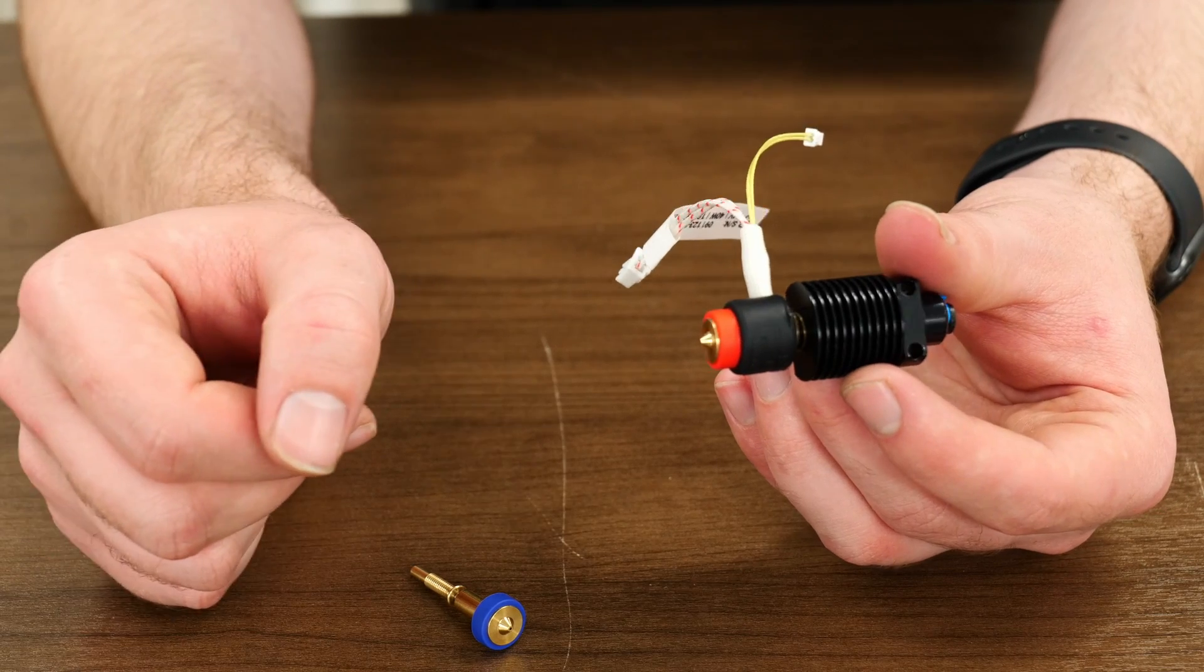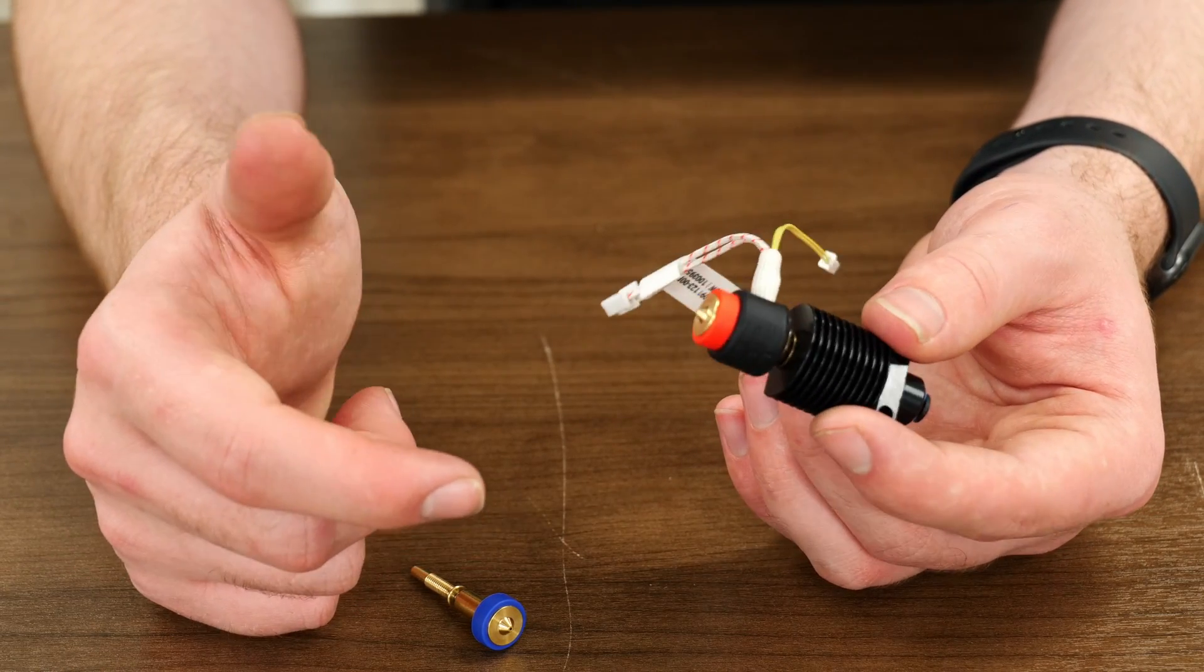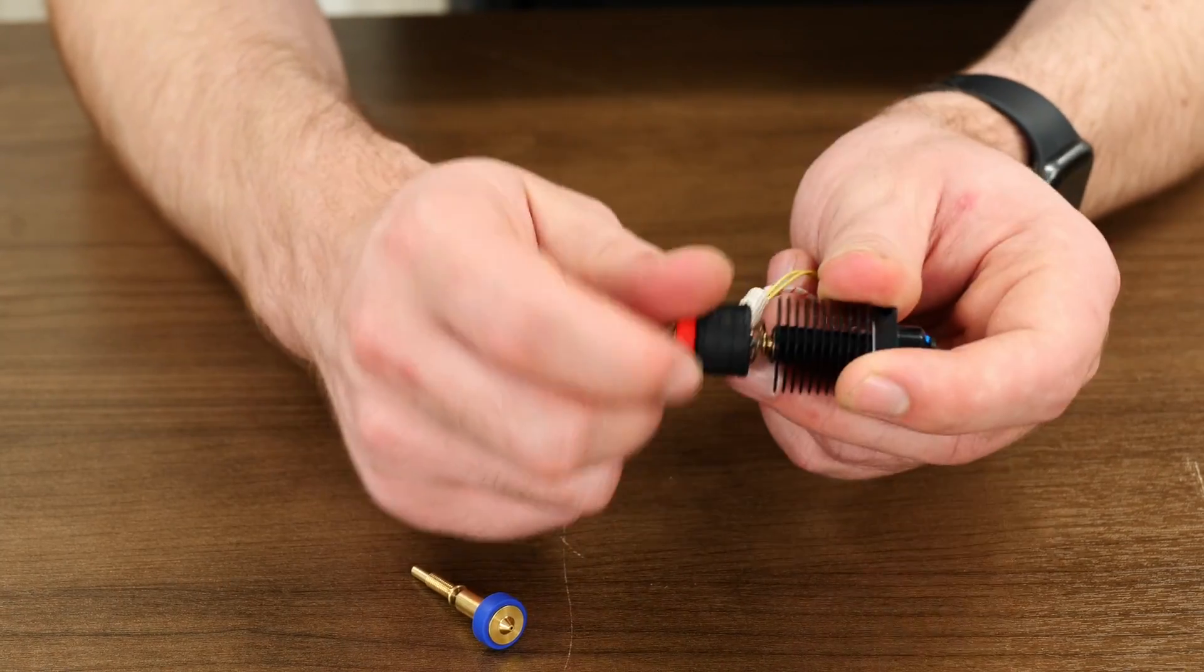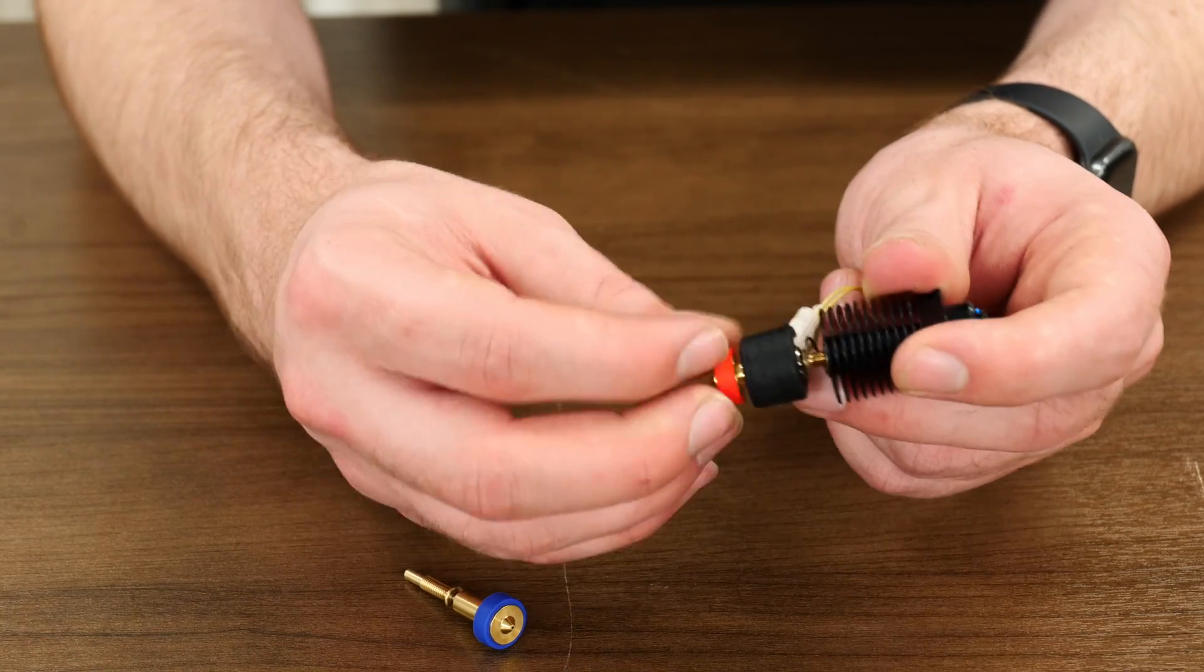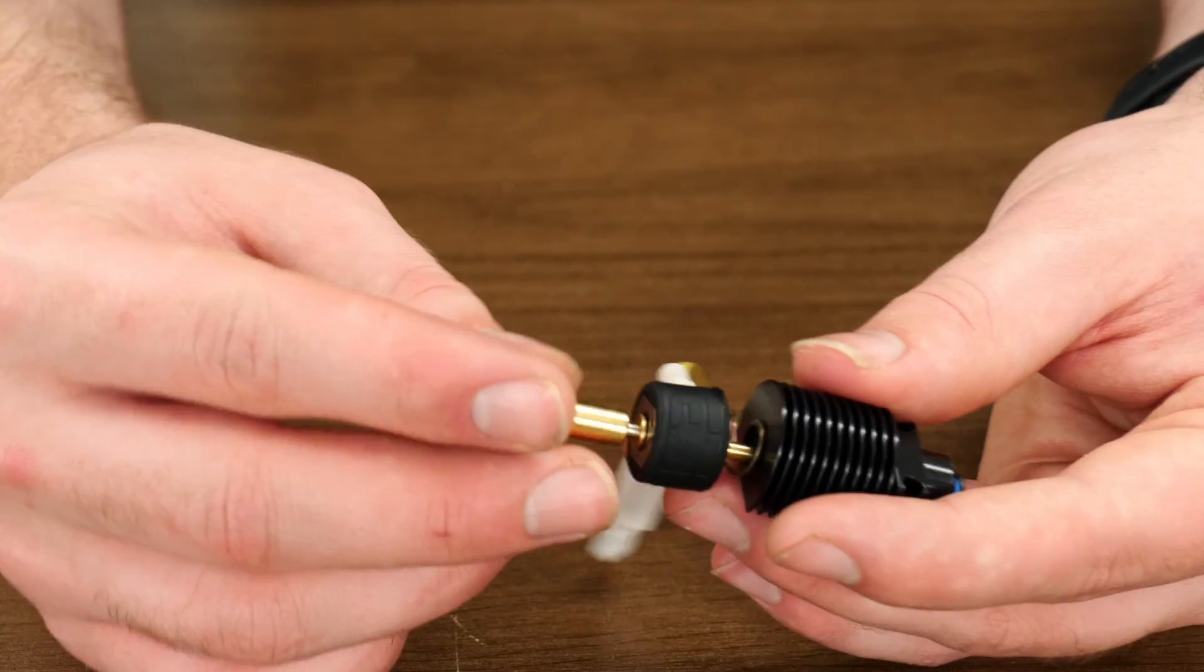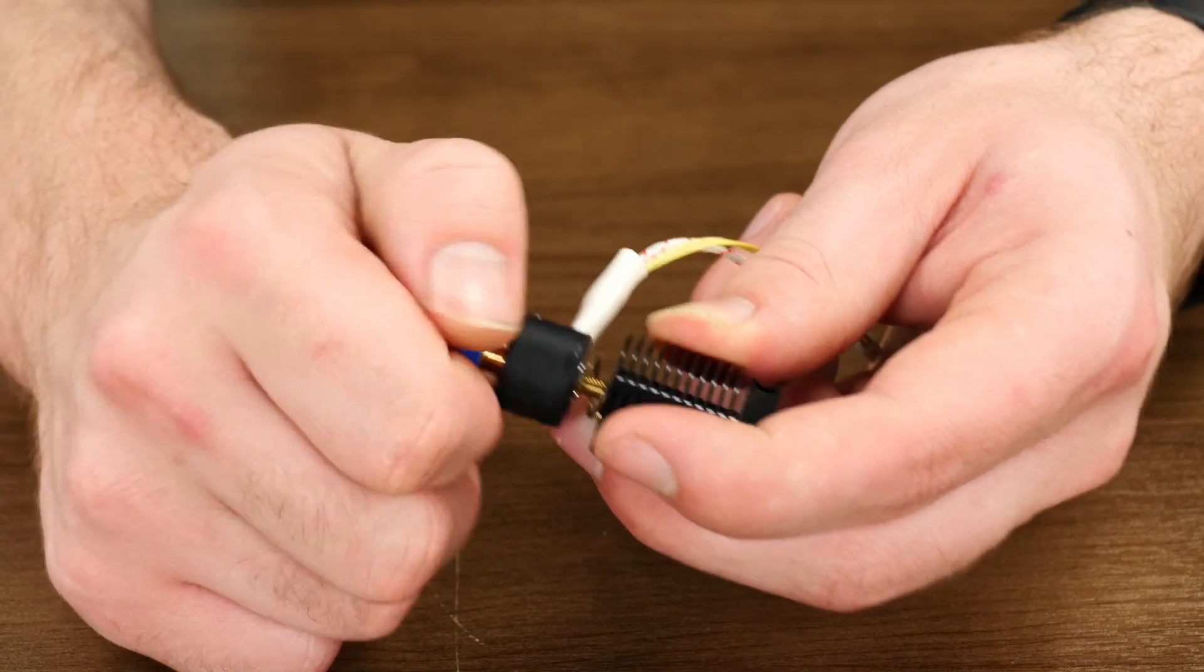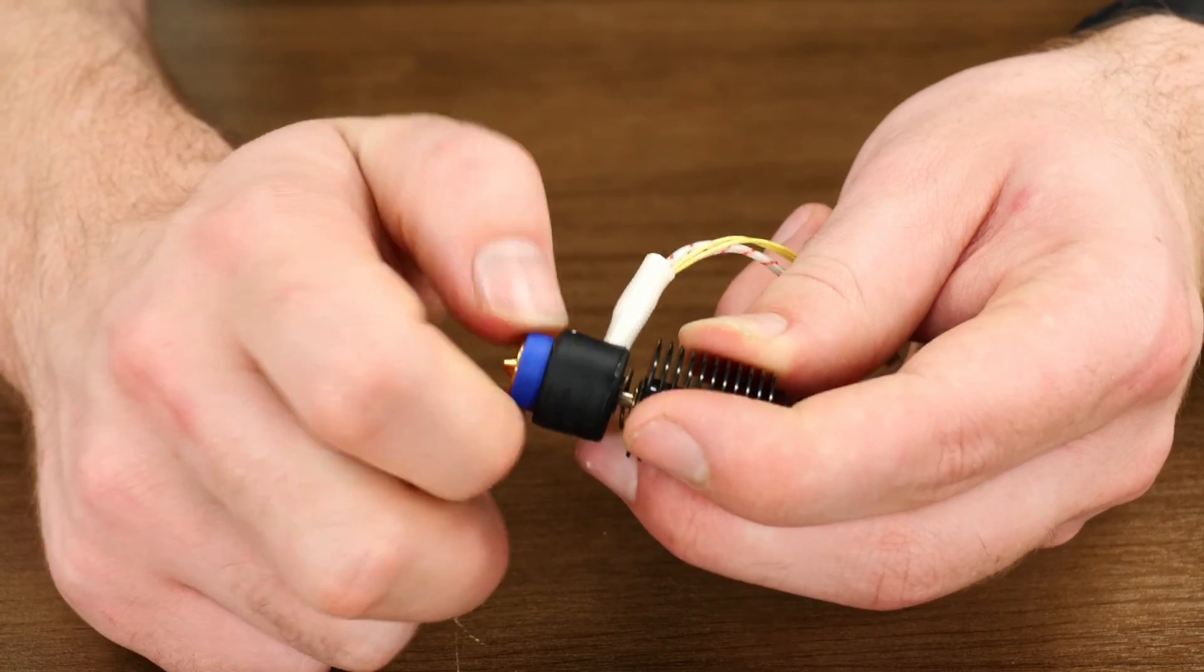So let's say I was printing and I had a nozzle jam or I wanted to change out to a 0.6. All I have to do is just unscrew this nozzle and this can be done on the printer while it's cold just as long as there's no filament in it. So I can unscrew it by hand. Now I'm going to take my 0.6 and I will put it into the Revo nozzle and I'm just going to screw it in until it's thumb tight.